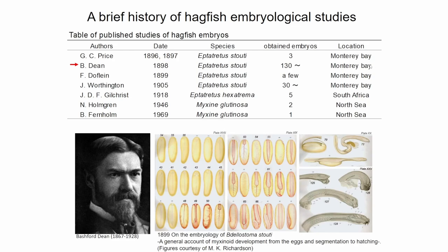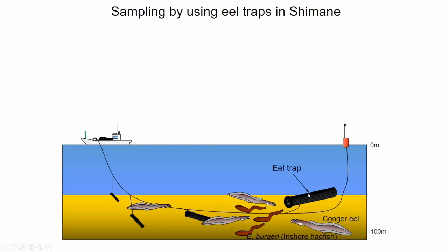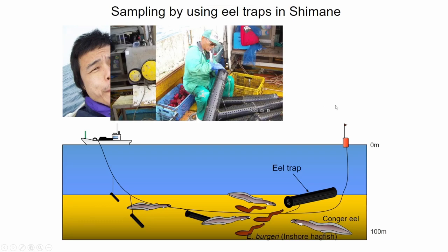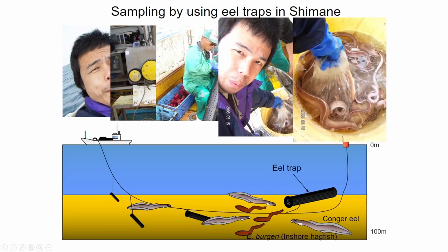After his publication, almost no published papers on hagfish embryology appeared. One reason is that they live in relatively deep sea areas and are hard to catch. But in Japan there is one species living in shallow water. I went to Shimane Prefecture and caught hagfish using a fish trap with a fisherman's help. Hagfish produce mucus — this slimy slime made it really hard to maintain them in a conventional aquarium.